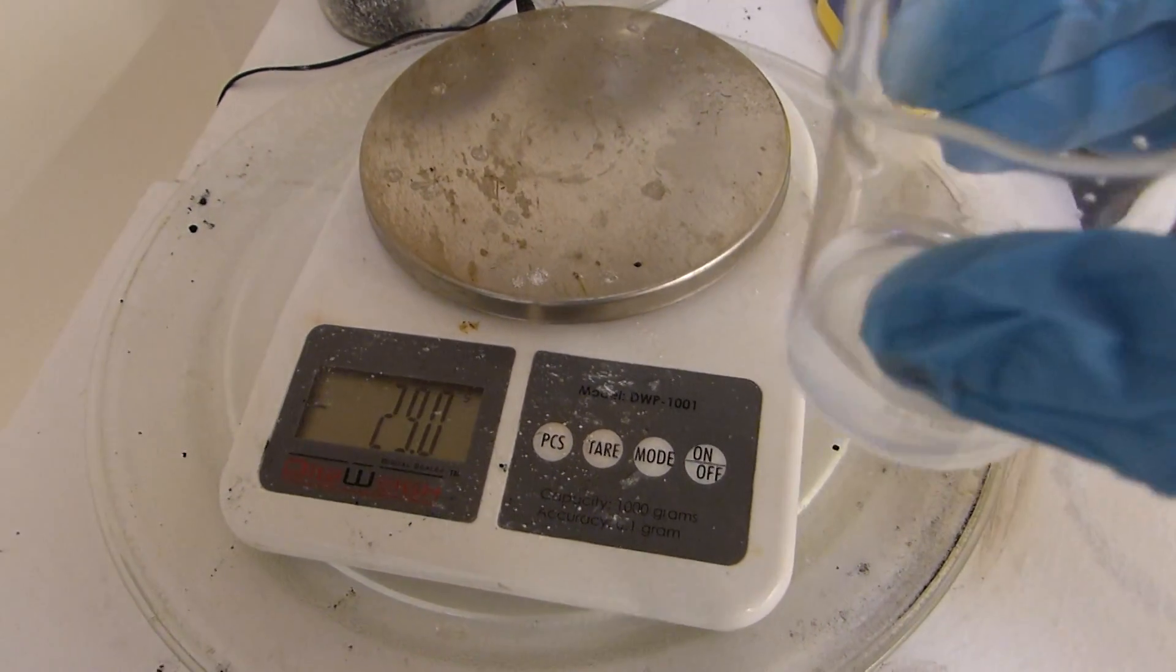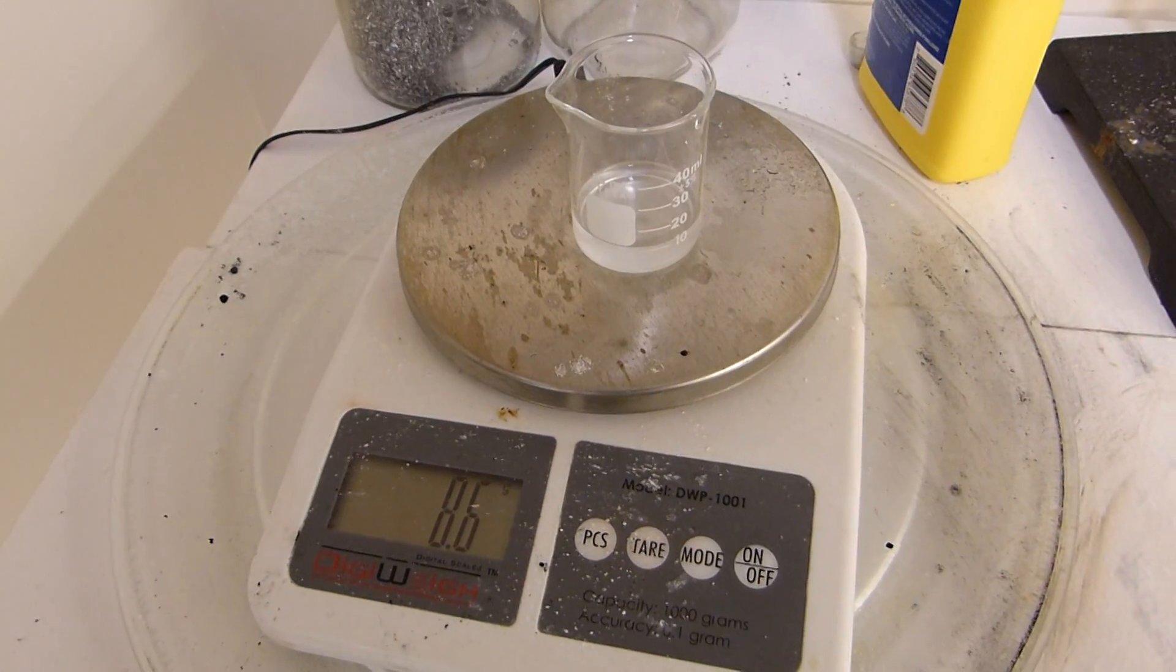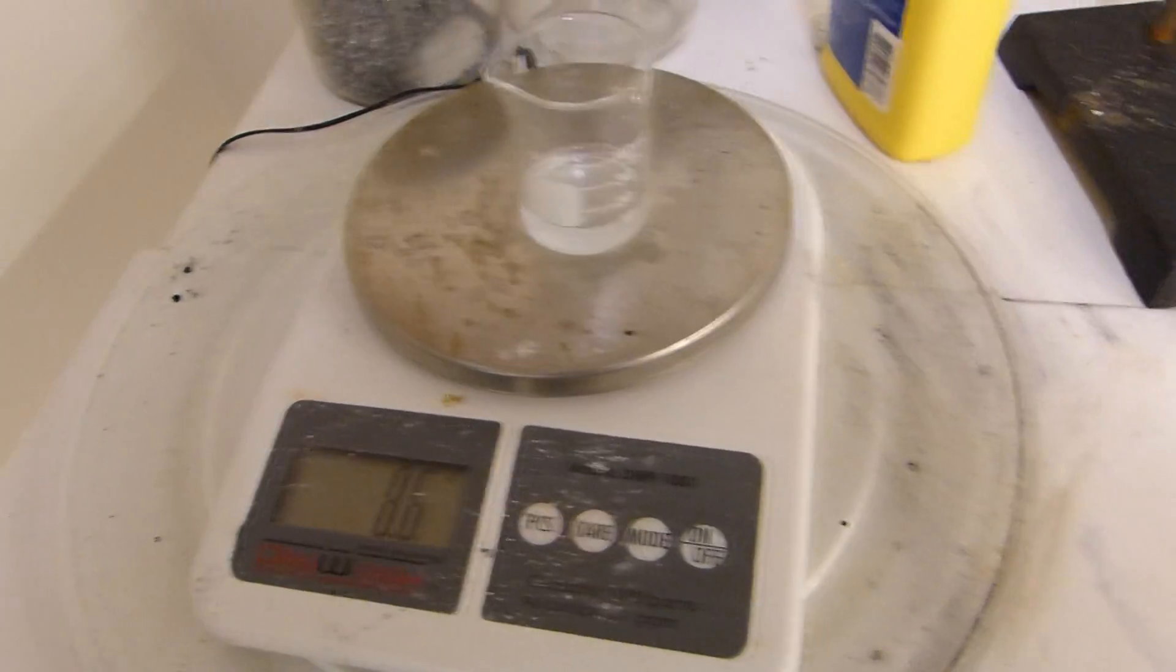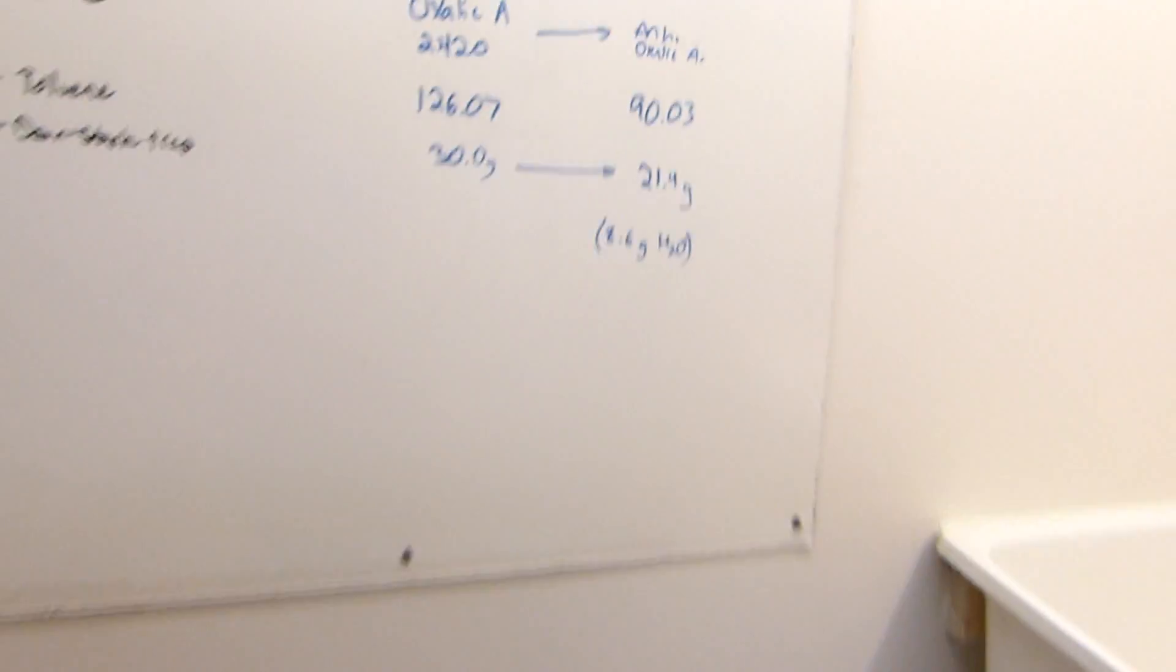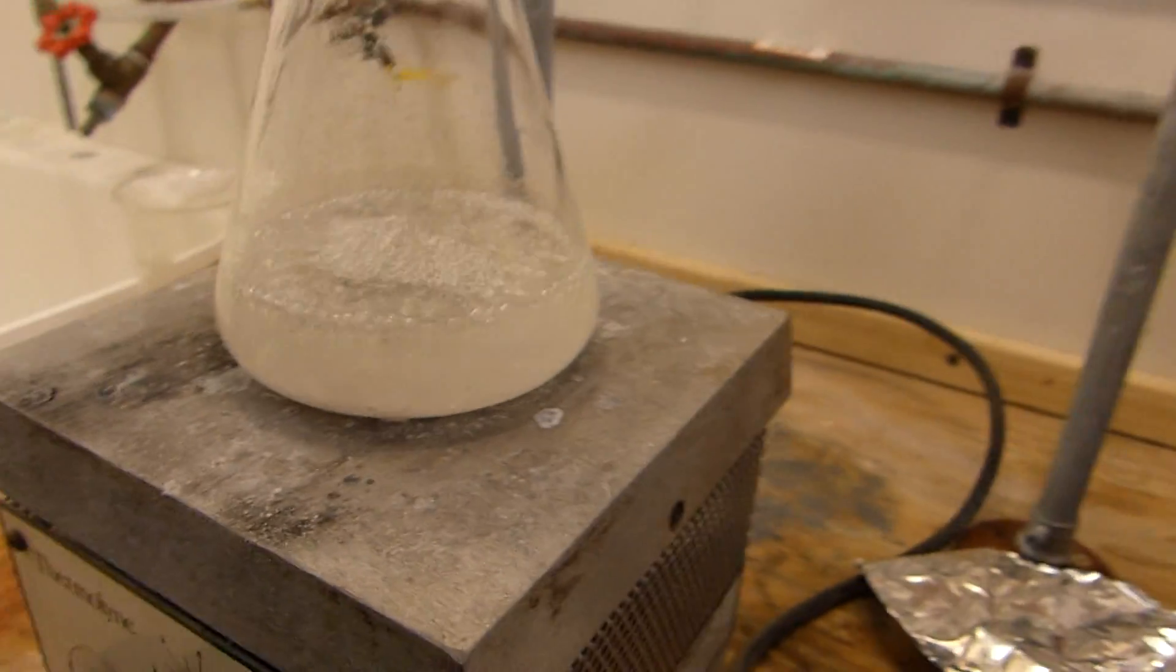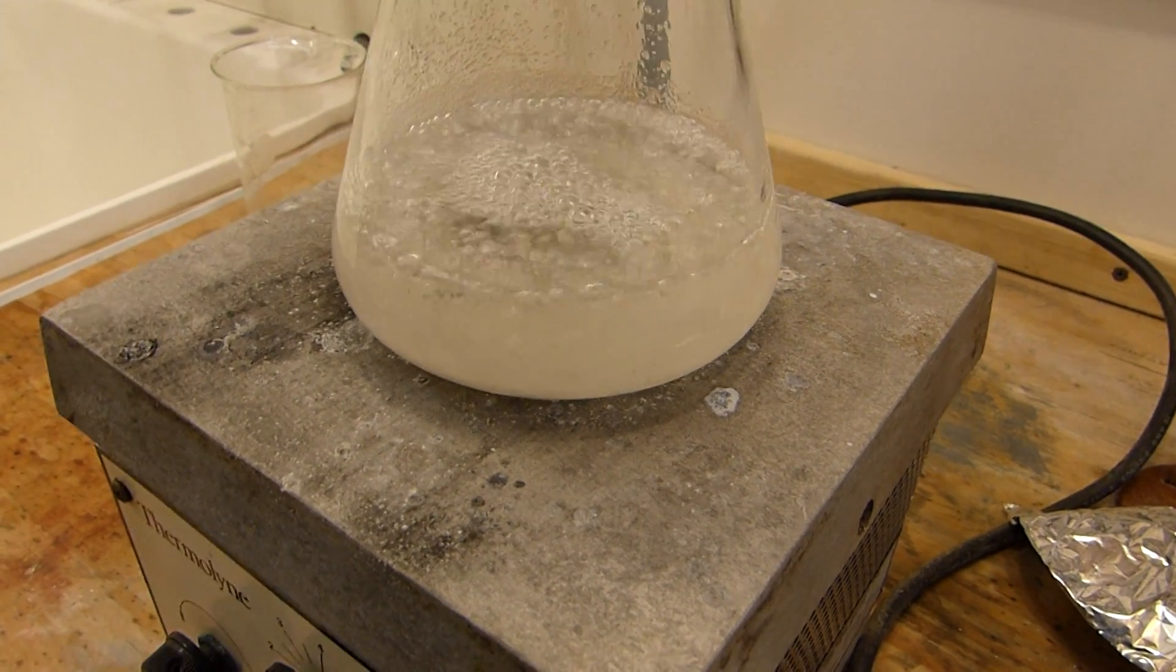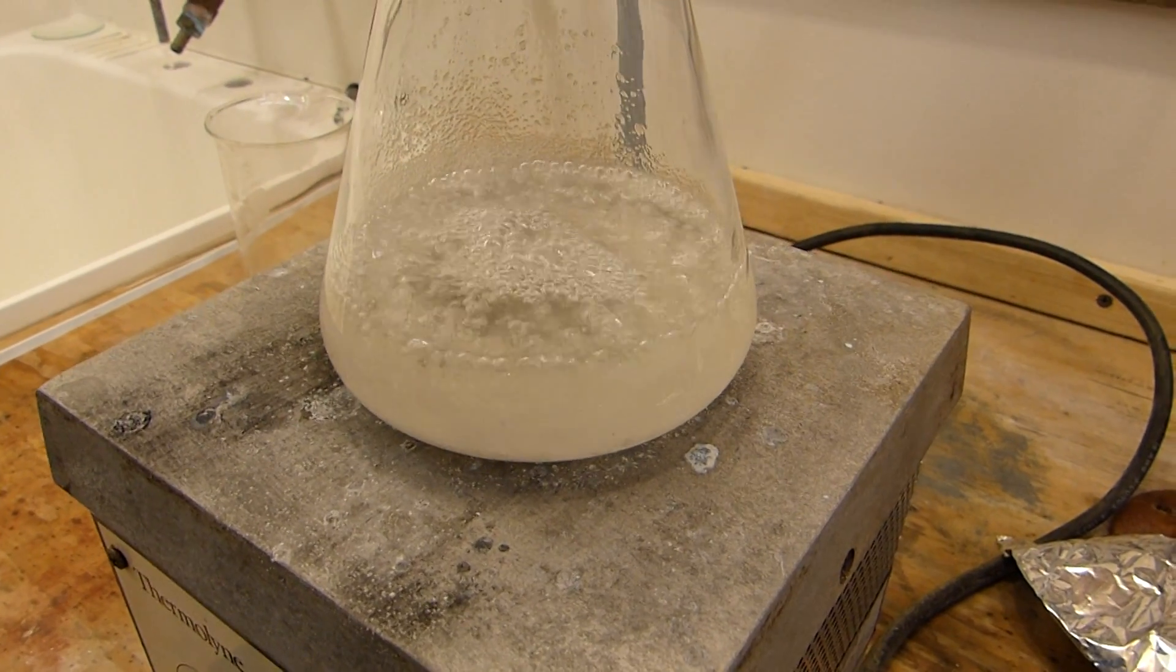To the scale. So the beaker was minus 29-ish. Throw this on. Hey, hey, 8.6 right on the money. And if you recall, we were looking for 8.6. So it looks like the oxalic acid in this container is pretty much perfectly dry. Well, maybe not perfectly, but very, very dry, to say the least.